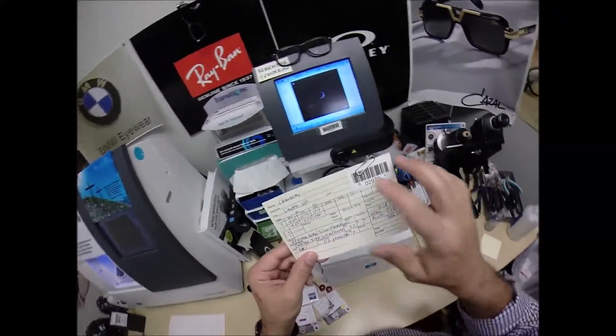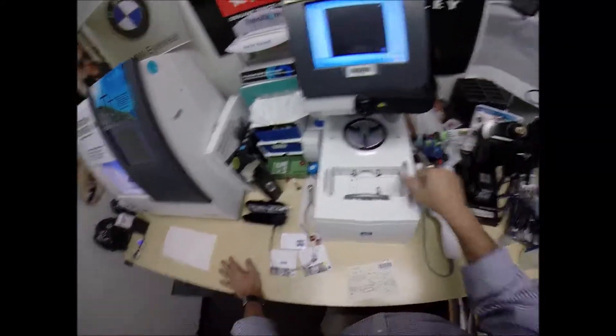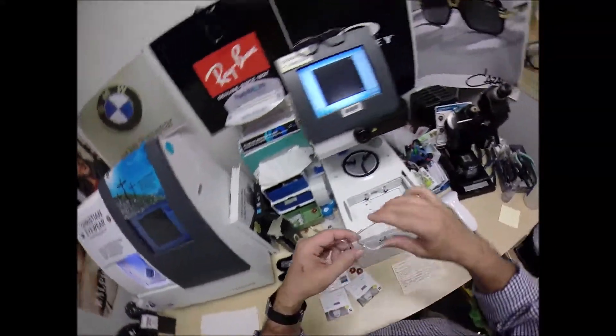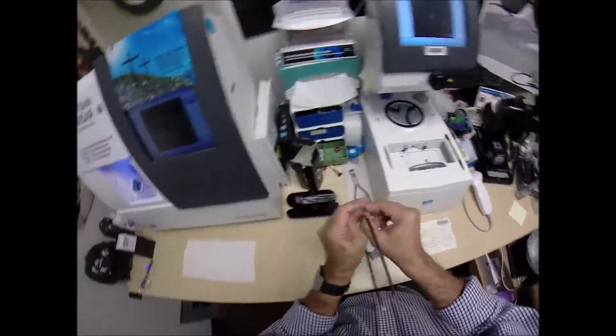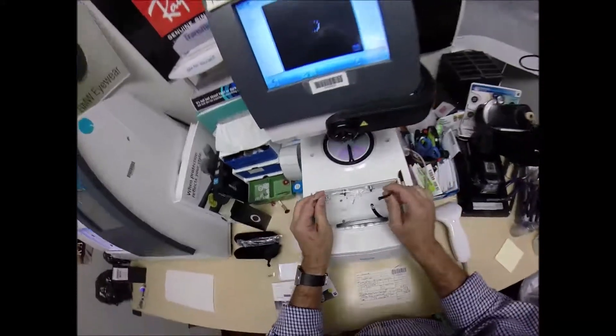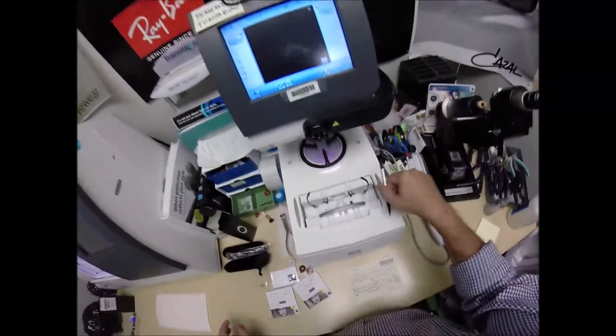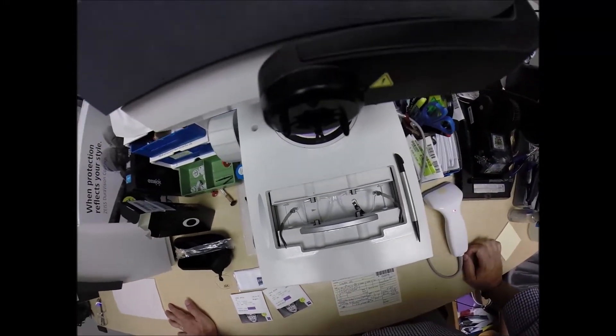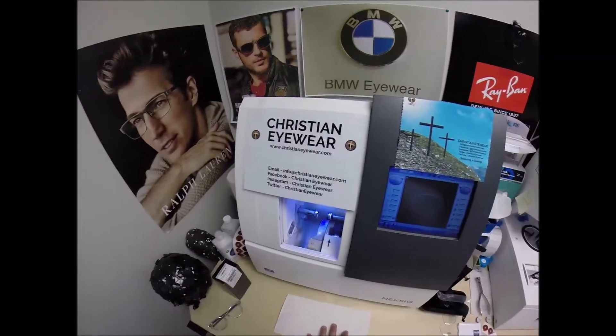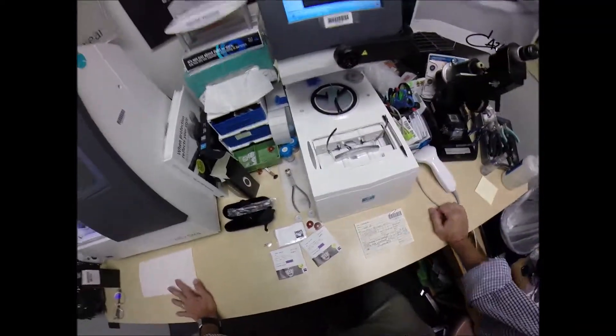I'm going to program the shape into the computer so that years from now, should you ever need new lenses, I can send them right to your home. I hit the start button, the little stylus is going to pop up, go around, trace the inside bevel of the right side of the frame before doing the same thing on the left side.